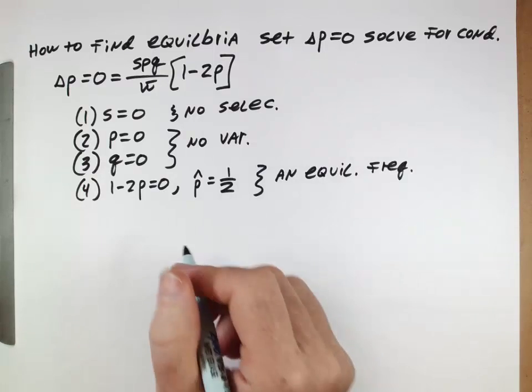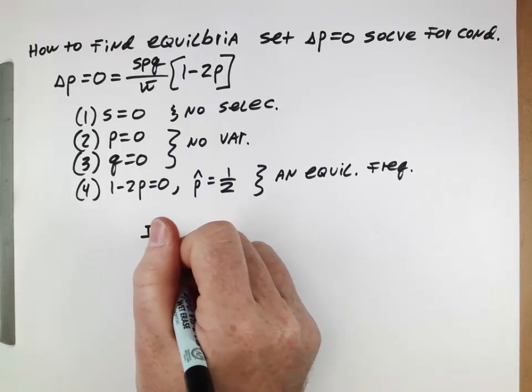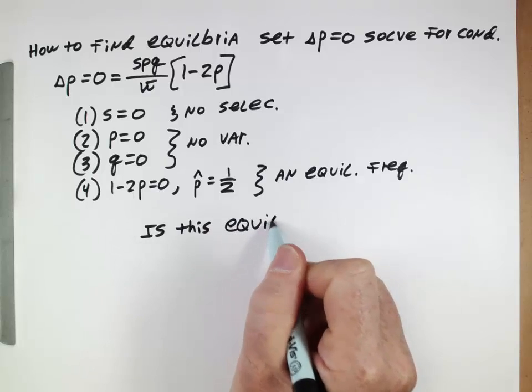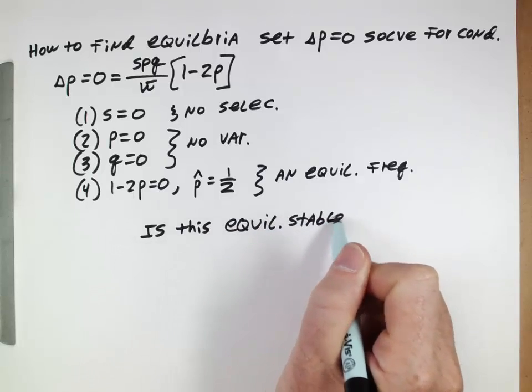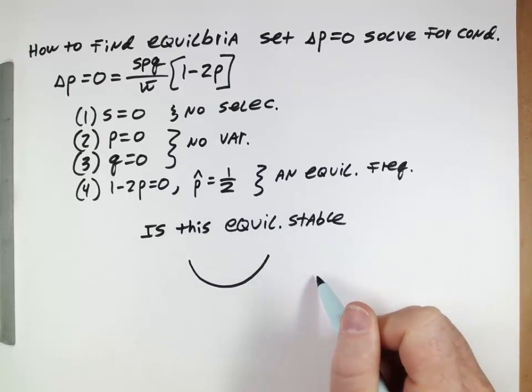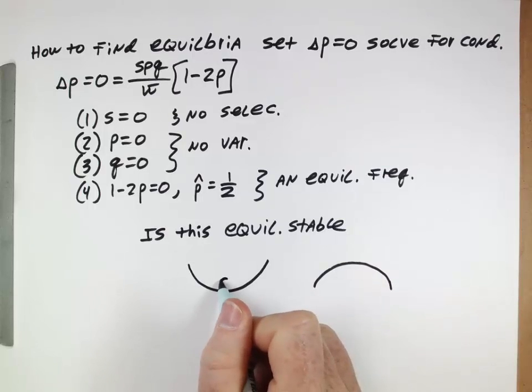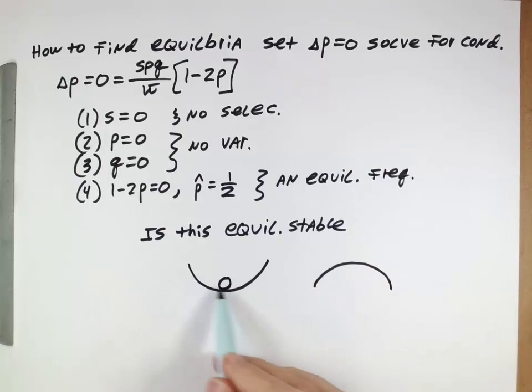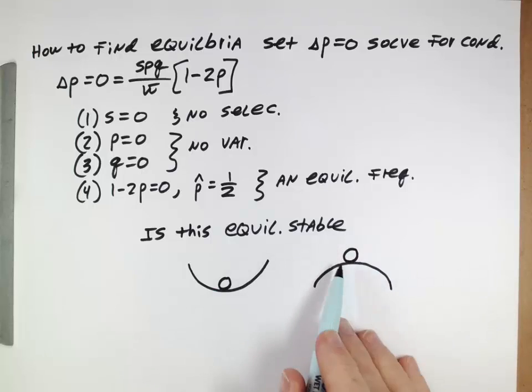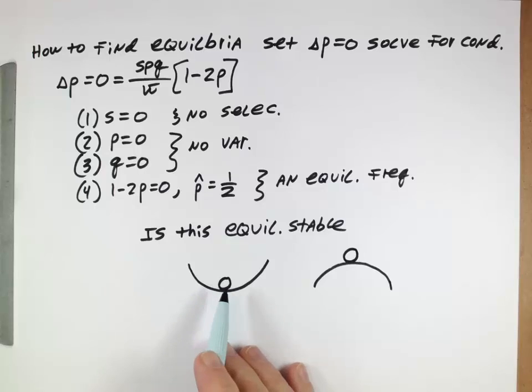And then the next question we want to think about conceptually is whether this equilibrium is stable or unstable. Is this equilibrium stable or not? A metaphor to think about here is you could have a ball at the bottom of a little surface like this, and it would kind of stay there. That's an equilibrium. Or you could have a ball perched at the top of a hill, and it would stay there. That's an equilibrium. But they're kind of different, right? If this one is nudged or perturbed a little bit, it may move, but then it'll come back to where it started.